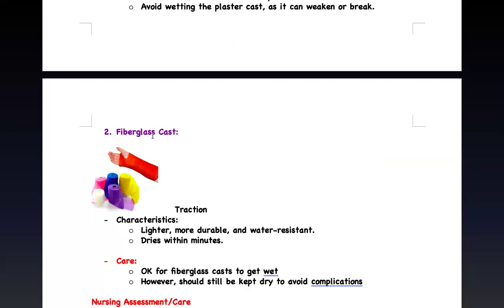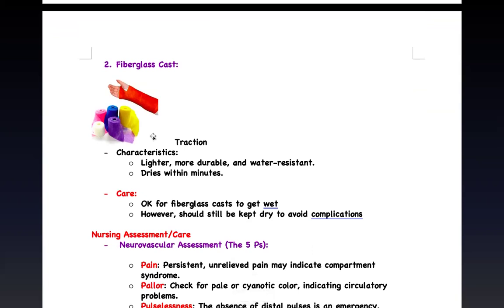The second type is a fiberglass cast. These are more expensive but lighter, more durable, and water resistant. You can shower with it and it dries within minutes — you don't have to wait 72 hours. Most casts you see in developed countries and in America are fiberglass because they can afford it and it's lighter for the patient. They can go to school, it's durable, they can shower with it. Even if it gets wet, it doesn't weaken the cast structure. That said, you should still keep it dry as much as possible to prevent complications.